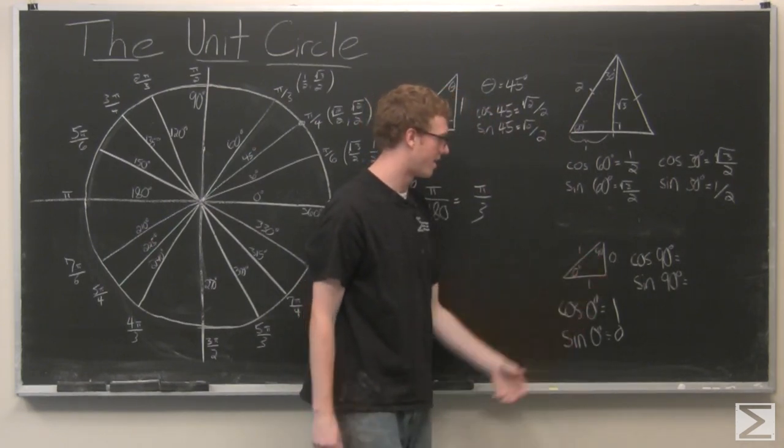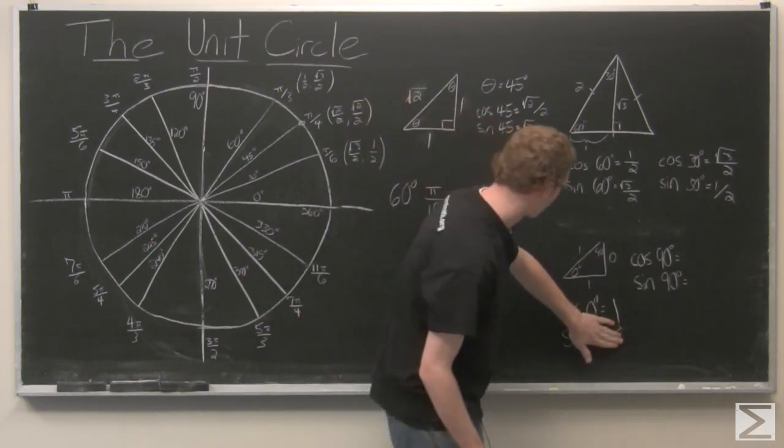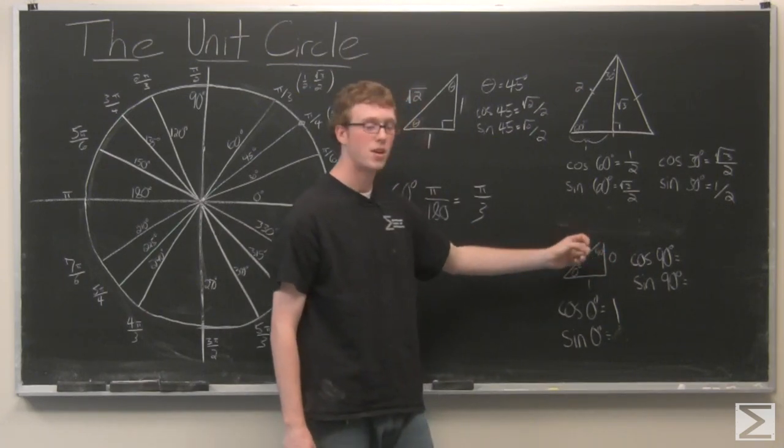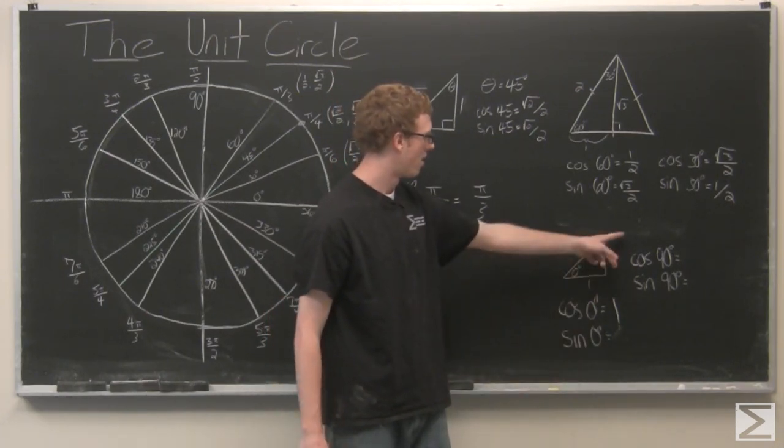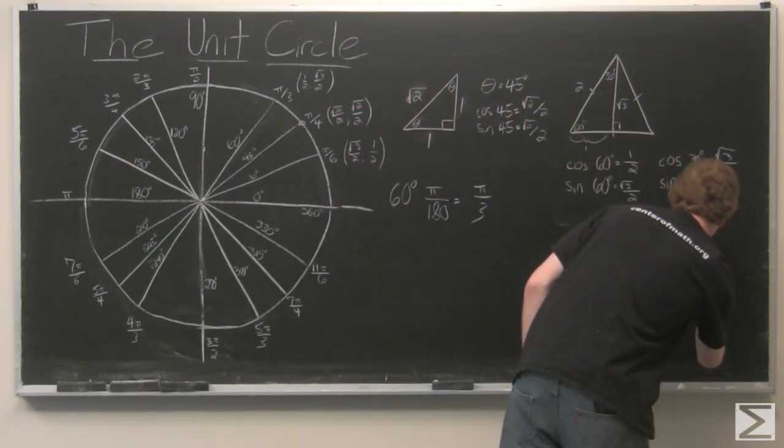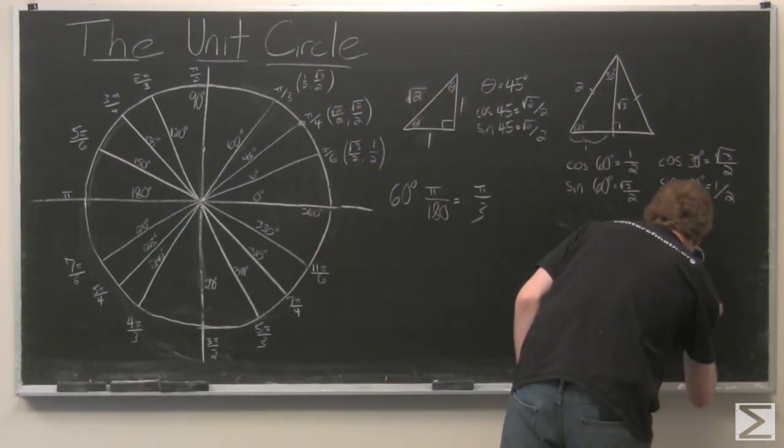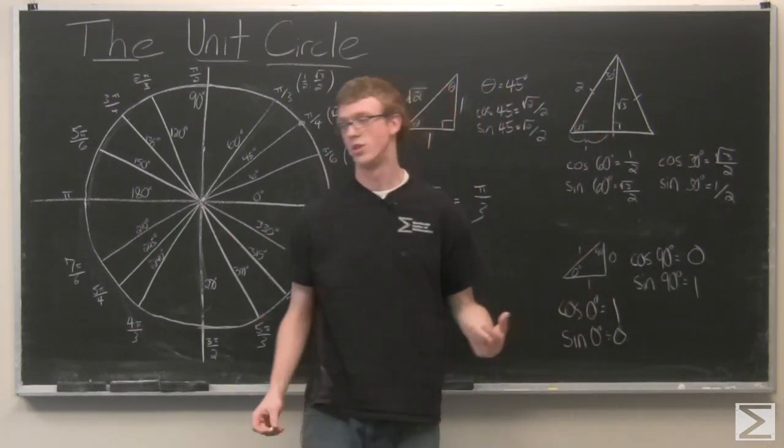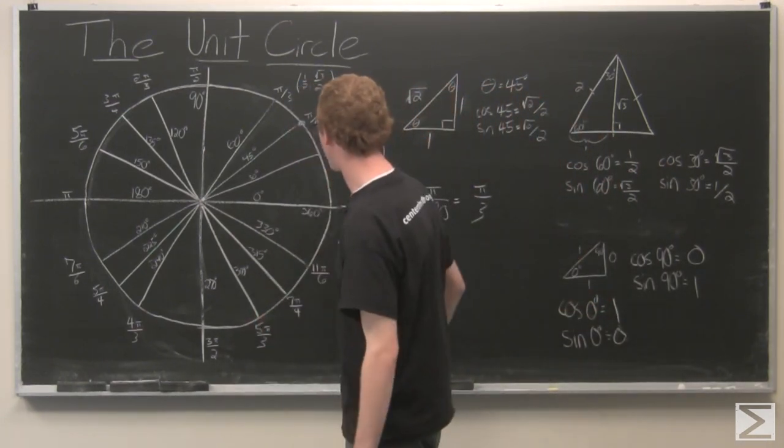And then we can take this 90 degree angle. And we can say that the cosine of the 90 degree angle adjacent over hypotenuse is 0. And sine is opposite over hypotenuse, which is 1. So we can go ahead and put those points in.